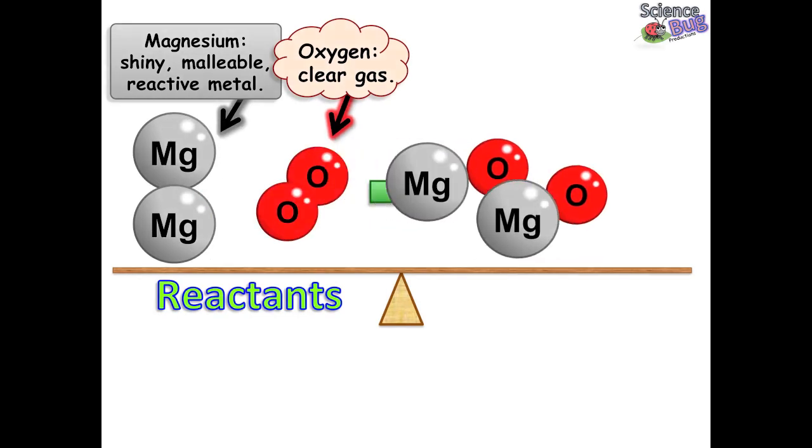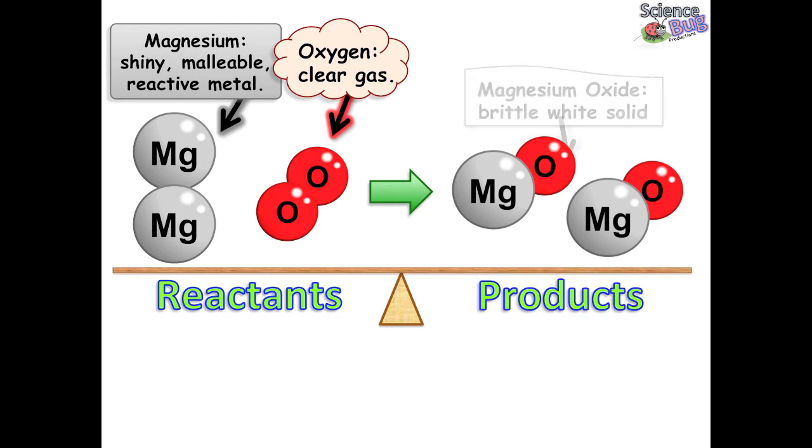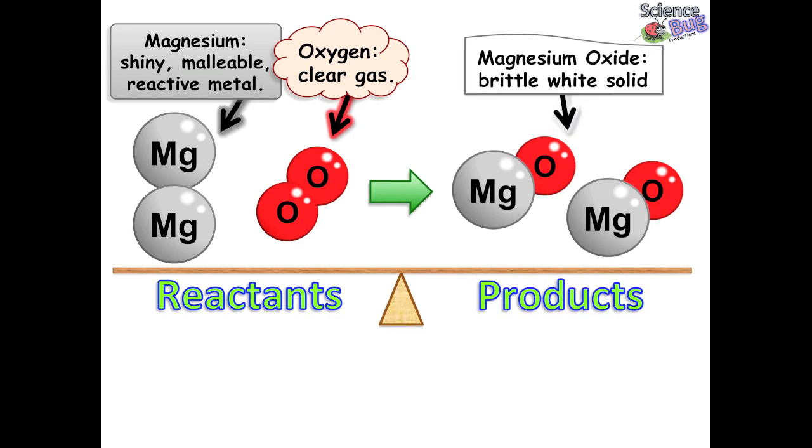Now, when these reactants undergo a chemical reaction, they produce a new product. Notice that the properties have now changed. This is now magnesium oxide, which is a brittle white solid.